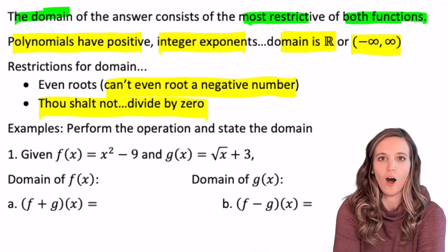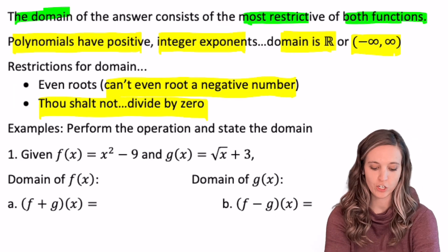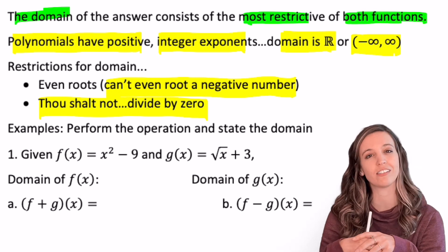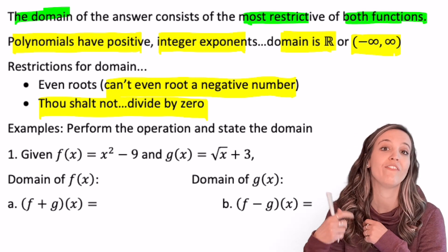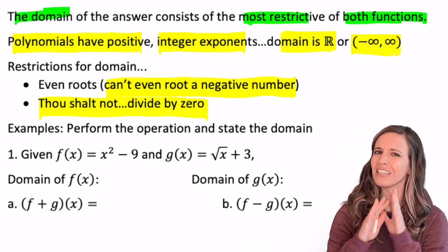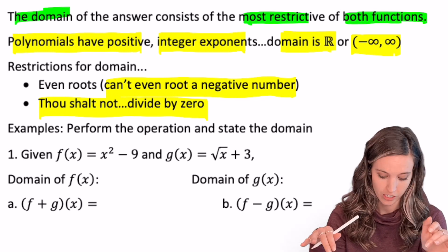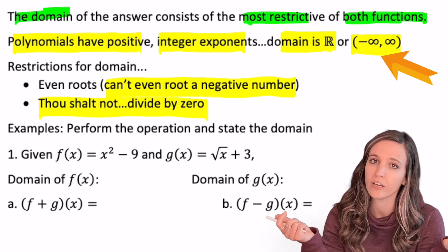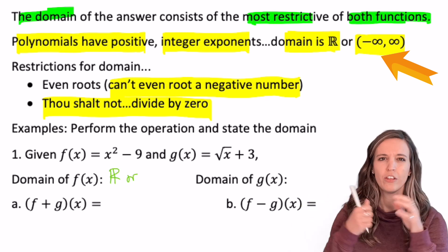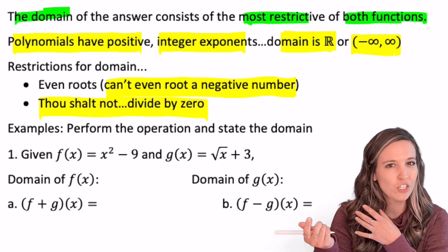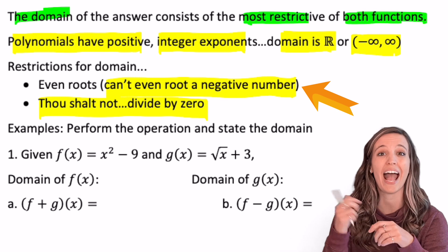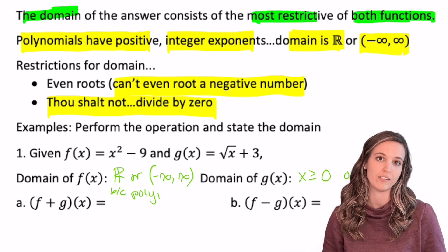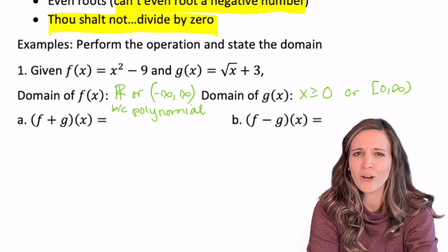Let's look at this with f of x and g of x. F of x is x squared minus 9 and g of x is the square root of x plus 3. Let's determine the domains first. The domain of f — x squared is a polynomial, so all real numbers. The domain of g — I have a square root, so x must be greater than or equal to zero.